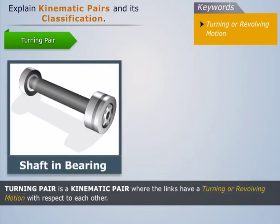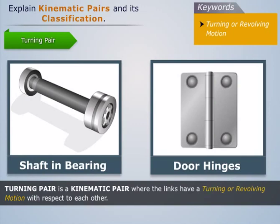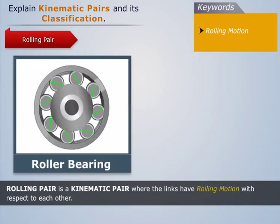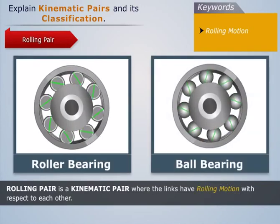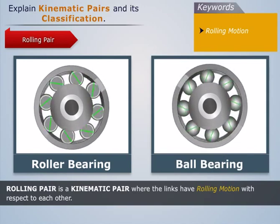A shaft in a bearing and door hinges are some examples of a turning pair. A rolling pair is a kinematic pair where the links have turning and sliding motion with respect to each other. Rollers and ball bearings are some examples of rolling pairs.